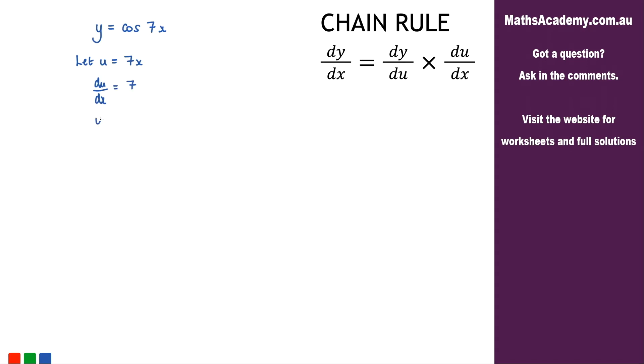So what we've got so far is that y is equal to cosine of u by making that substitution. And now we can differentiate this.